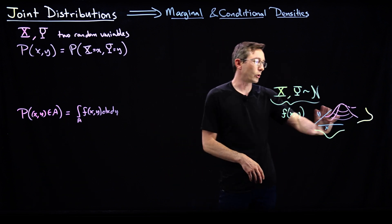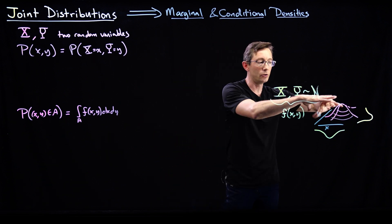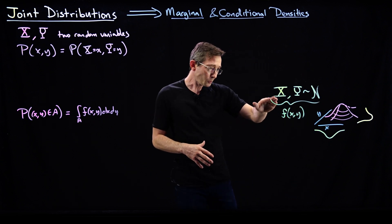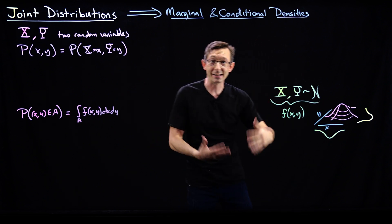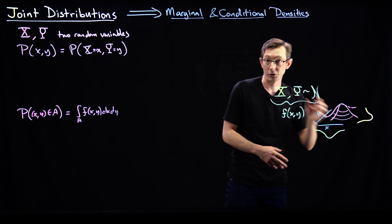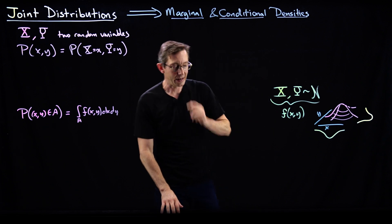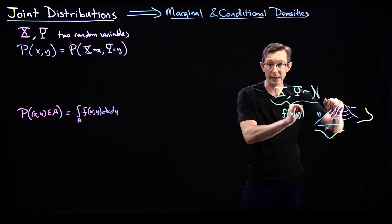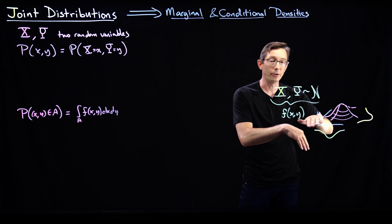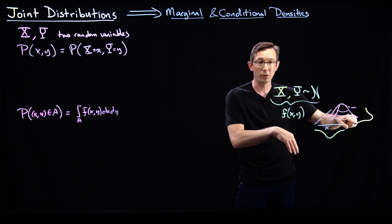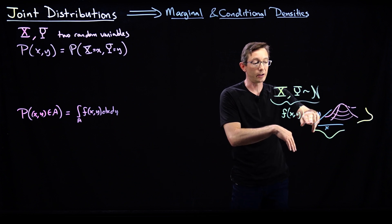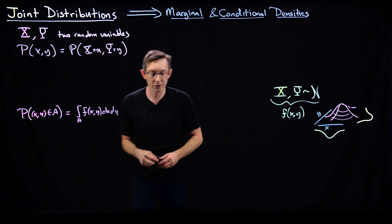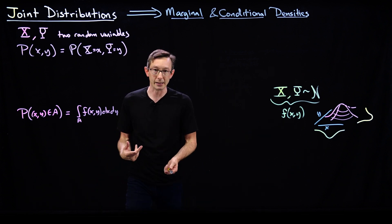We've already seen that you can have joint distributions like this kind of two-dimensionally symmetric Gaussian in X and Y, where each of X and Y is itself distributed as a Gaussian. I hinted that if you take this two-dimensional Gaussian probability density and just average out the X variable, you'll get a Gaussian in Y, and if you average out the Y variable, you'll get a Gaussian in X. Those are called the marginal density functions.